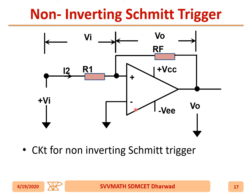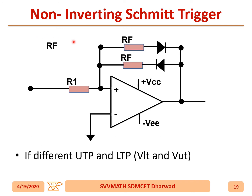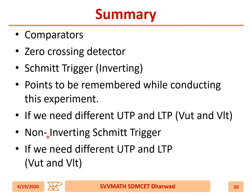You can also design a non-inverting Schmitt trigger by giving V_in to the non-inverting terminal of the op-amp instead of the inverting terminal. The design equation is V_UT and V_LT given by V_out × (R1 / R_f). If different V_UT and V_LT are required, use two diodes with R2 and R3 instead of a single R_f. In summary, we discussed: comparator, zero crossing detector, Schmitt trigger (inverting and non-inverting), and how to design for different UTP and LTP.